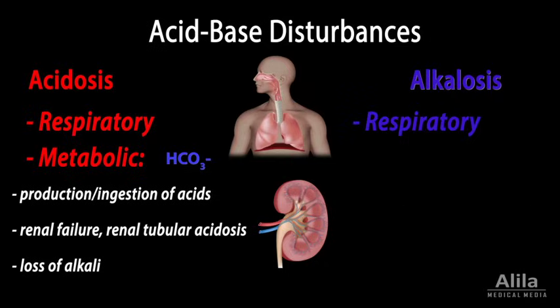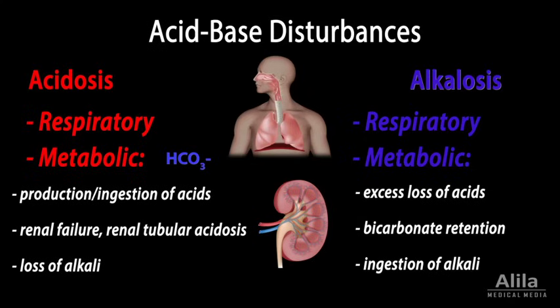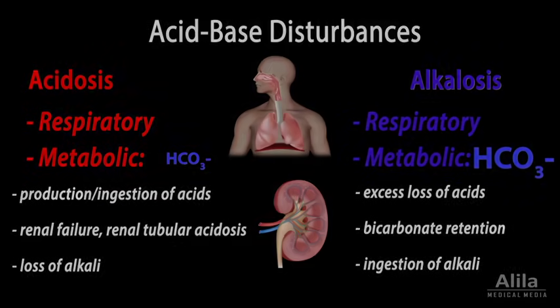Alkalosis can also be either respiratory or metabolic. Respiratory alkalosis is caused by increased ventilation, resulting in excessive exhalation of carbon dioxide. Metabolic alkalosis can result from excess loss of acids through the kidneys or gastrointestinal tract, bicarbonate retention, or ingestion of alkali. Metabolic alkalosis is characterized by a primary increase in plasma bicarbonate.